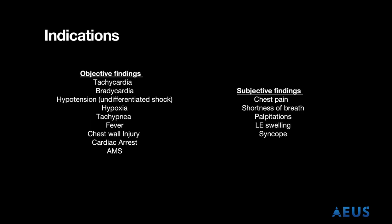Below are a list of indications for which you might do an echo in the emergency room. It is not meant to serve as a comprehensive list, but some objective findings which might make you reach for a probe would be tachycardia, shock, altered mental status, or cardiac arrest, and some subjective findings would be chest pain, shortness of breath, or syncope.